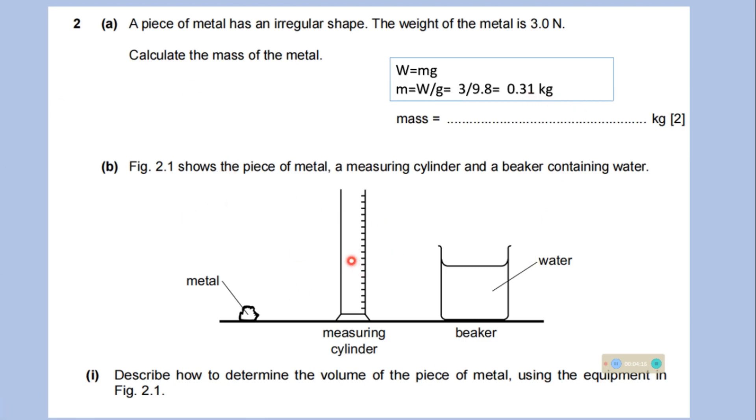In this figure this shows the piece of metal, a measuring cylinder and a beaker containing water. Describe how to determine the value of the piece of metal using the equipment in figure 2.1. So we have uploaded a video where we have discussed detail how to find the volume of irregular shape using the displacement method.